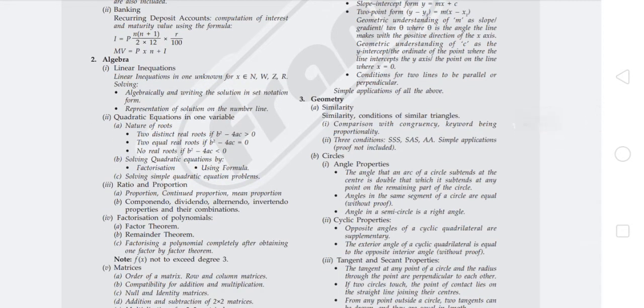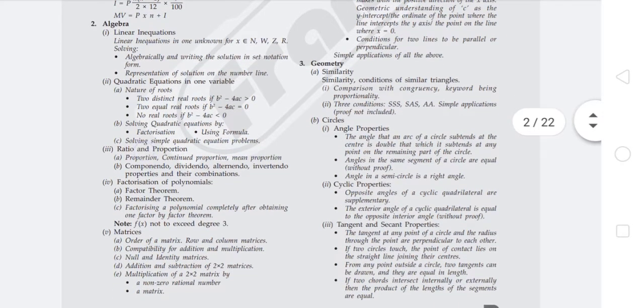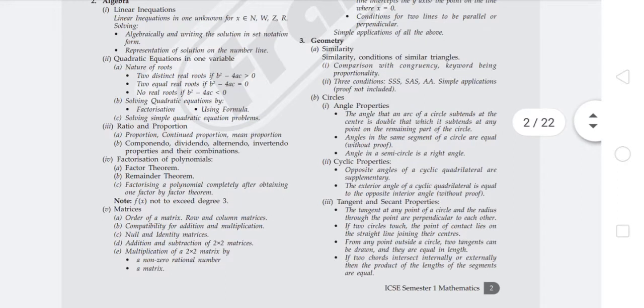In Geometry, Similarity chapter covers similarity conditions of similar triangles, comparison with congruency, and the three conditions: SSS (side-side-side), SAS (side-angle-side), and AAA (angle-angle-angle). Simple applications only, proofs are excluded.